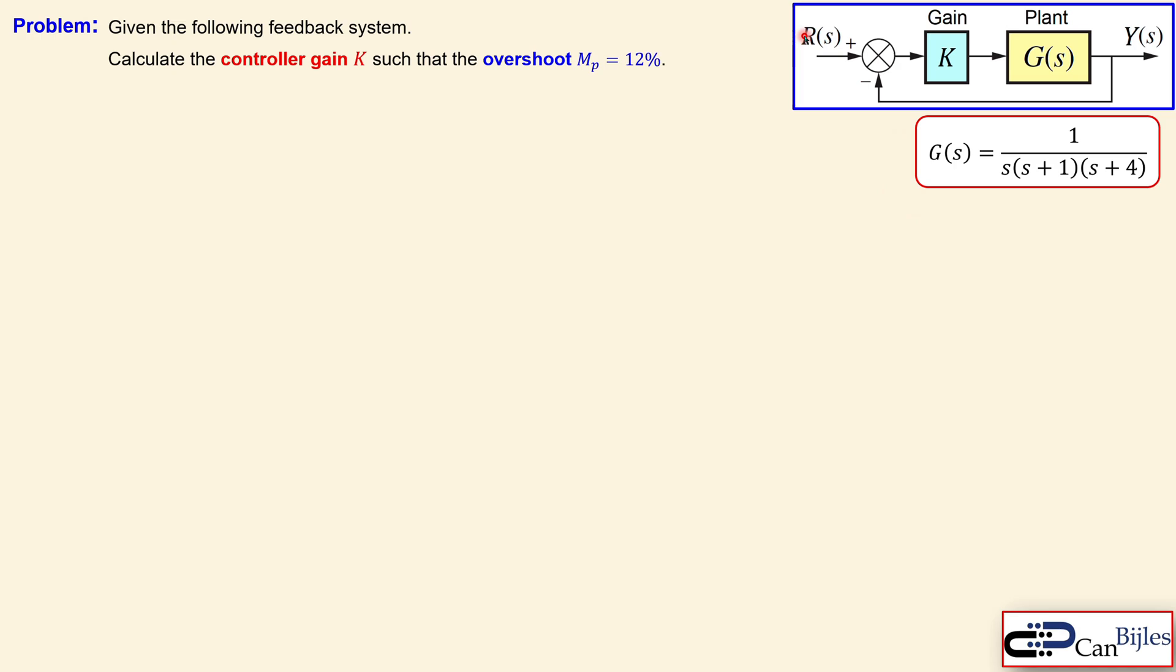The reference here is the unit step input and the output is given by Y. So what we do is the following: first we calculate the damping ratio from the overshoot. The overshoot is 12% or 0.12 as the scalar value.